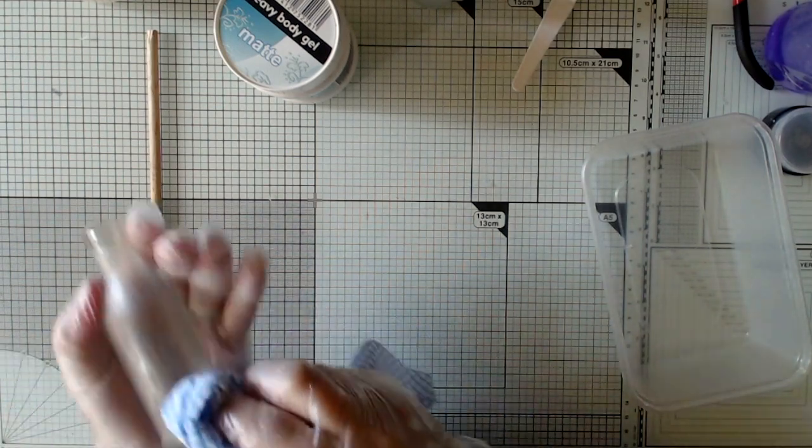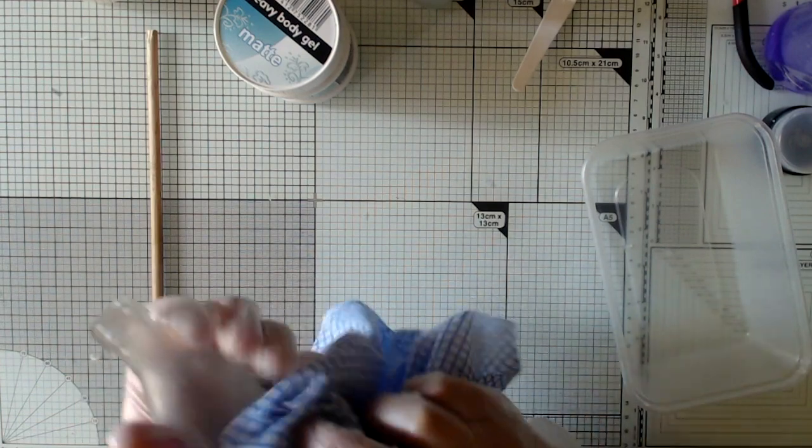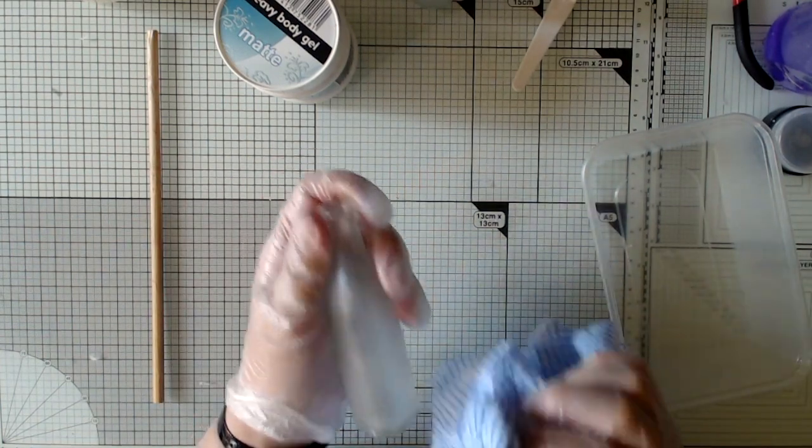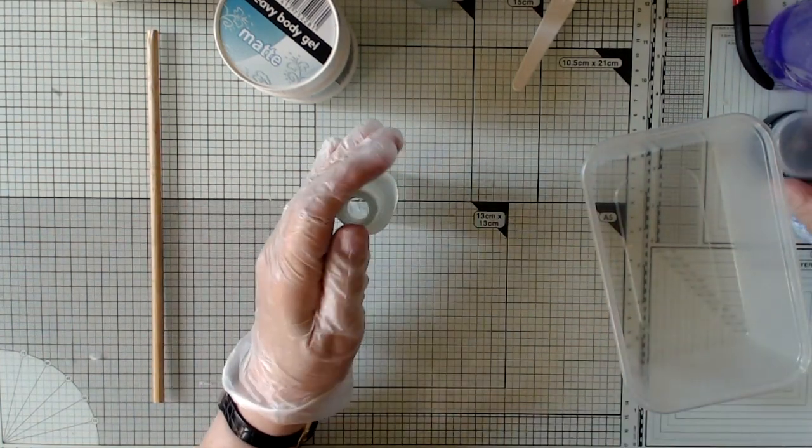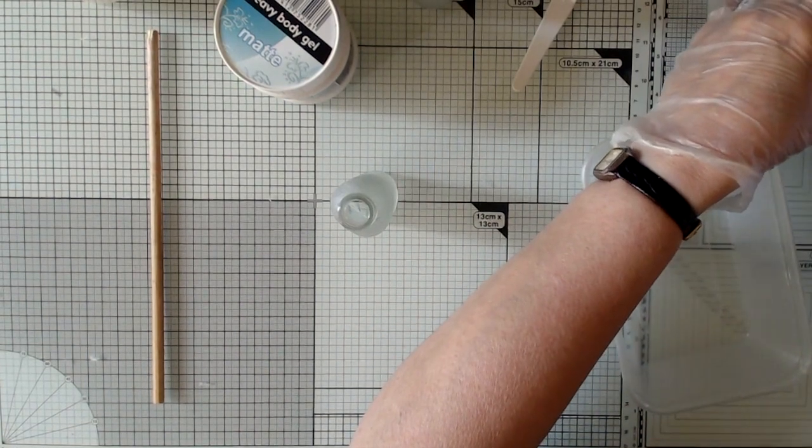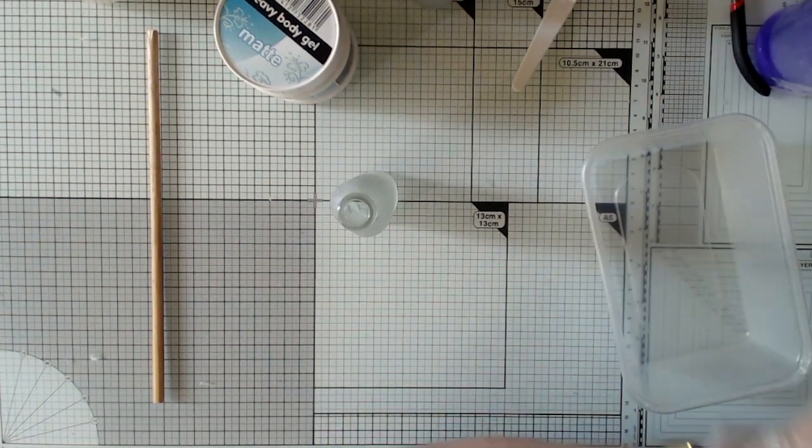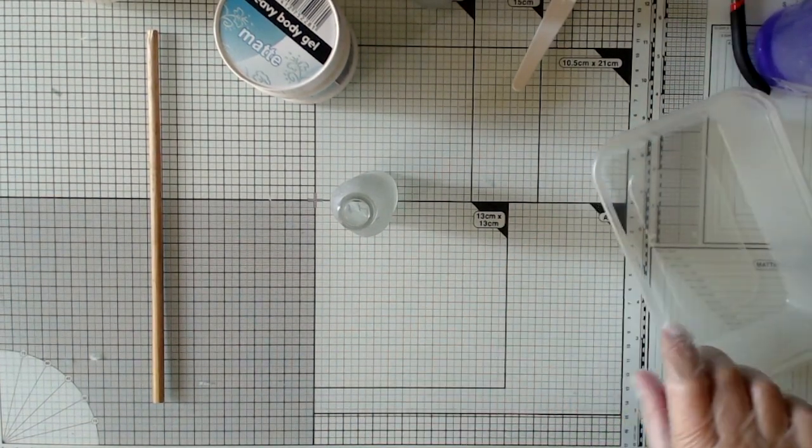I'm using methylated spirits because it's easily available in the UK and it is cheap. If where you are rubbing alcohol is easier to obtain, then use that. It's just so that any grease that's on the surface is cleaned off so that we have the best possible chance of our gel sticking to the surface of the glass.